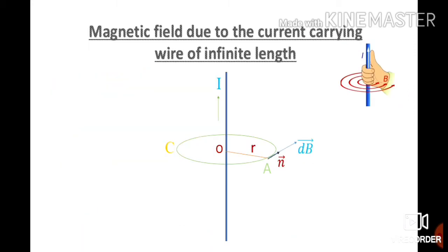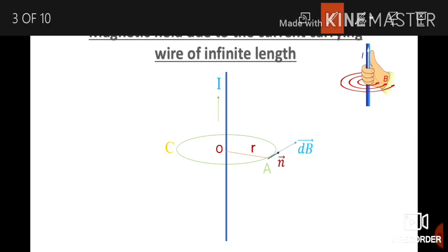The next topic is the magnetic field due to a current-carrying infinite wire. Let us consider a conductor — one conductor is a current-carrying wire with current in the upward direction. We want to find the magnetic field due to the infinite length of the wire.